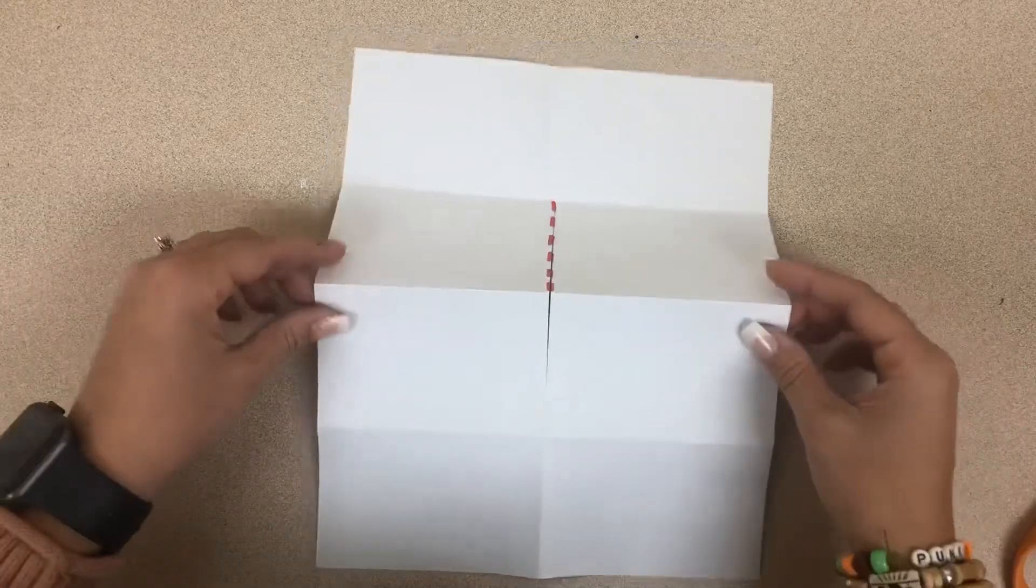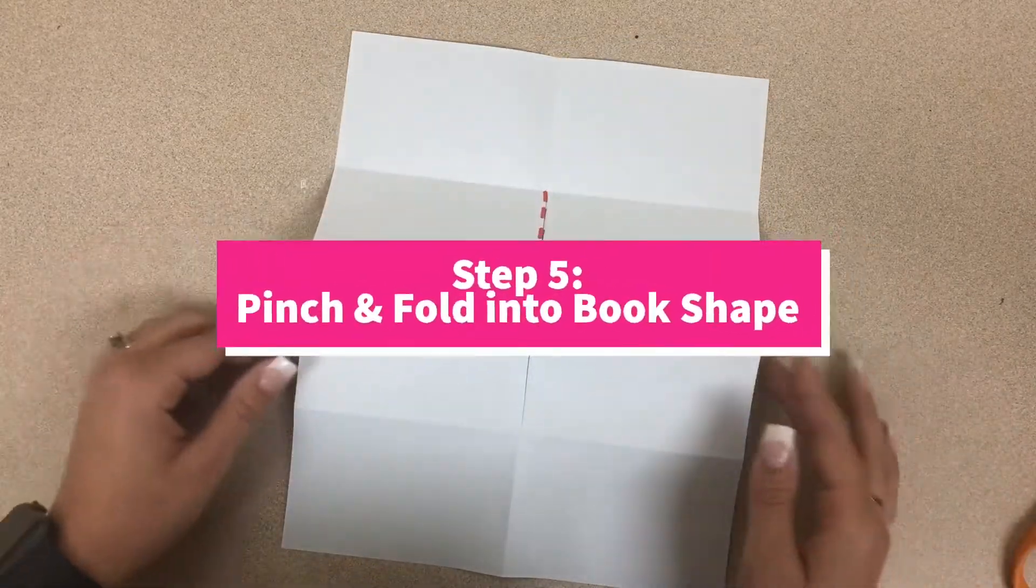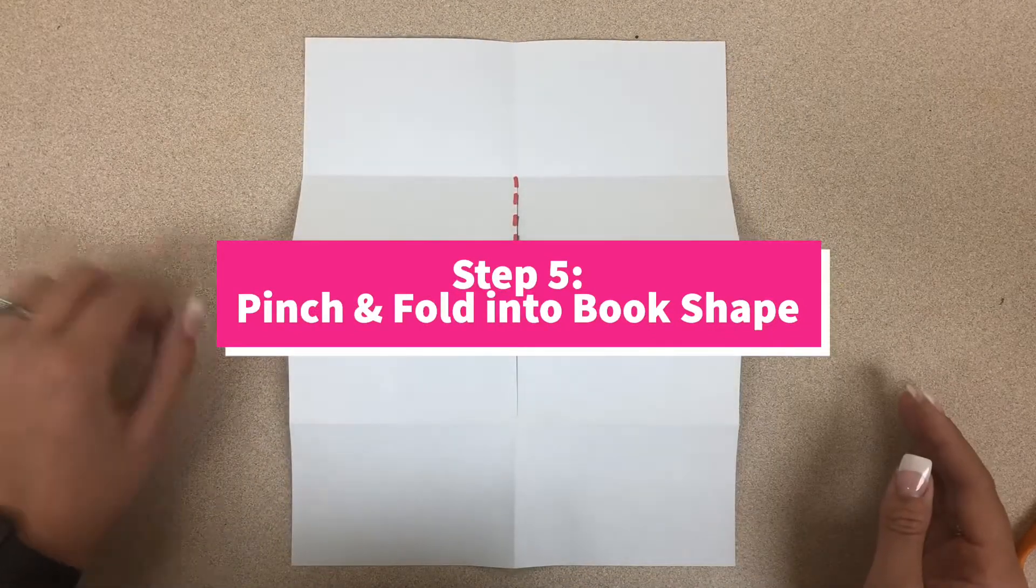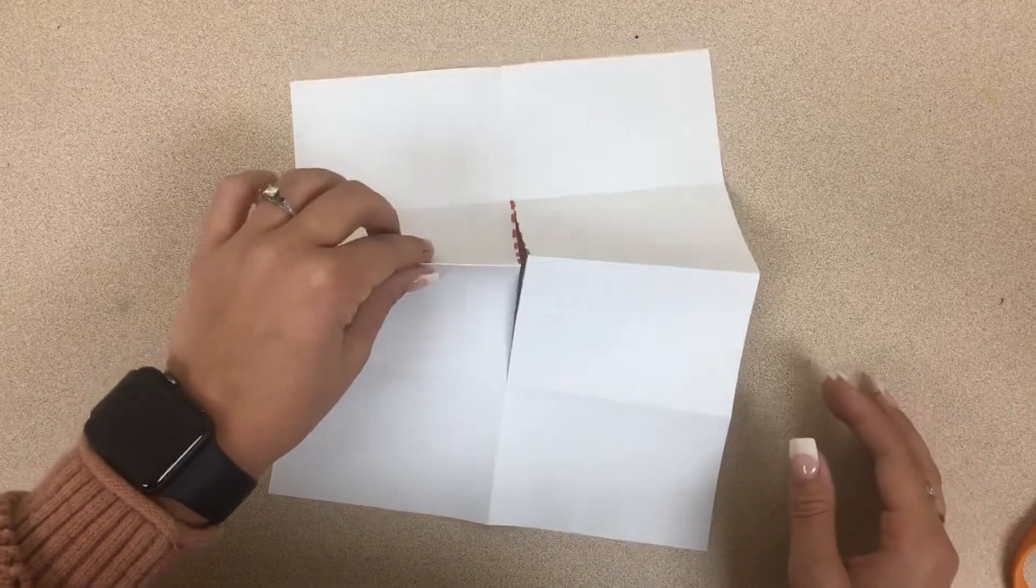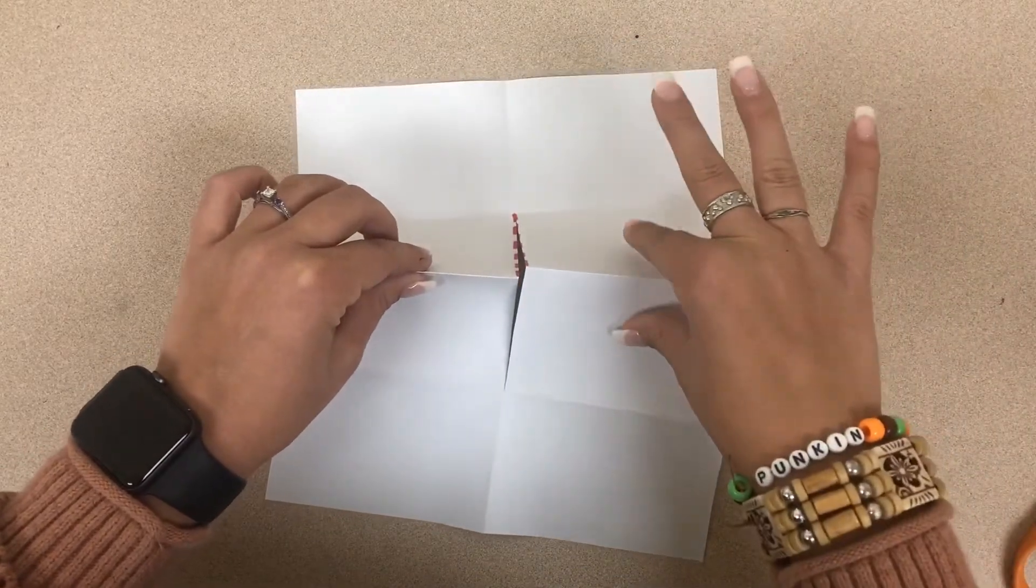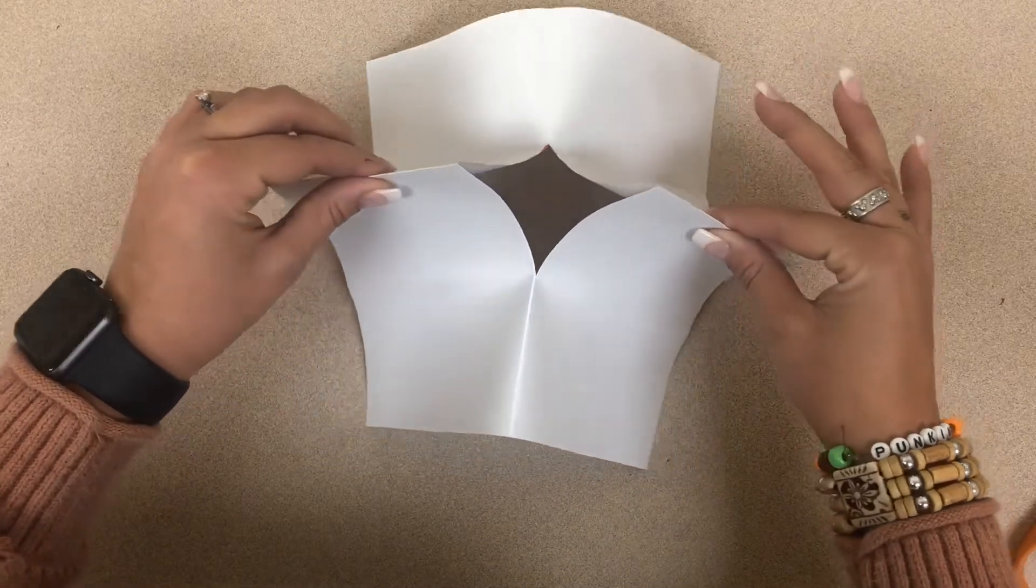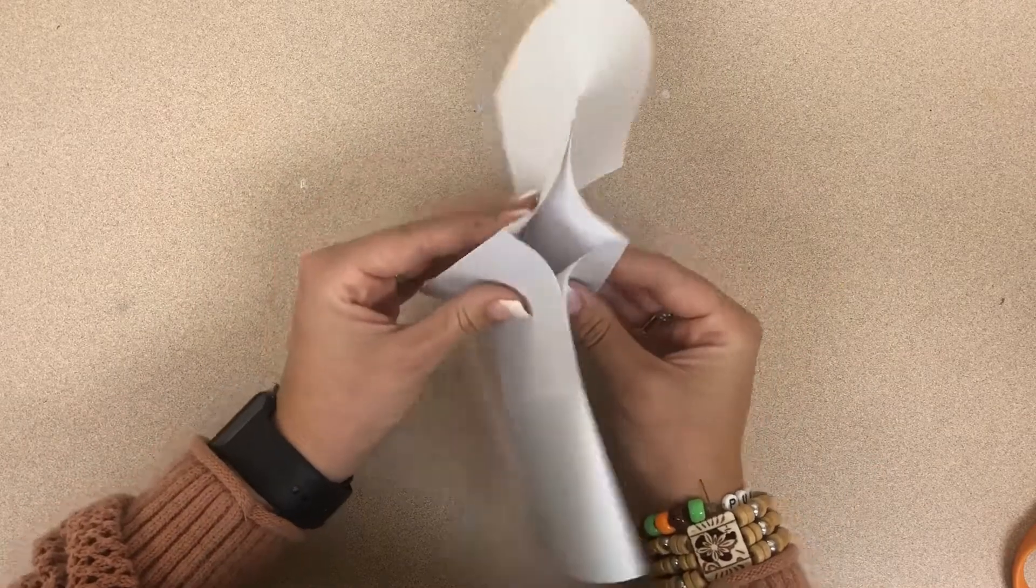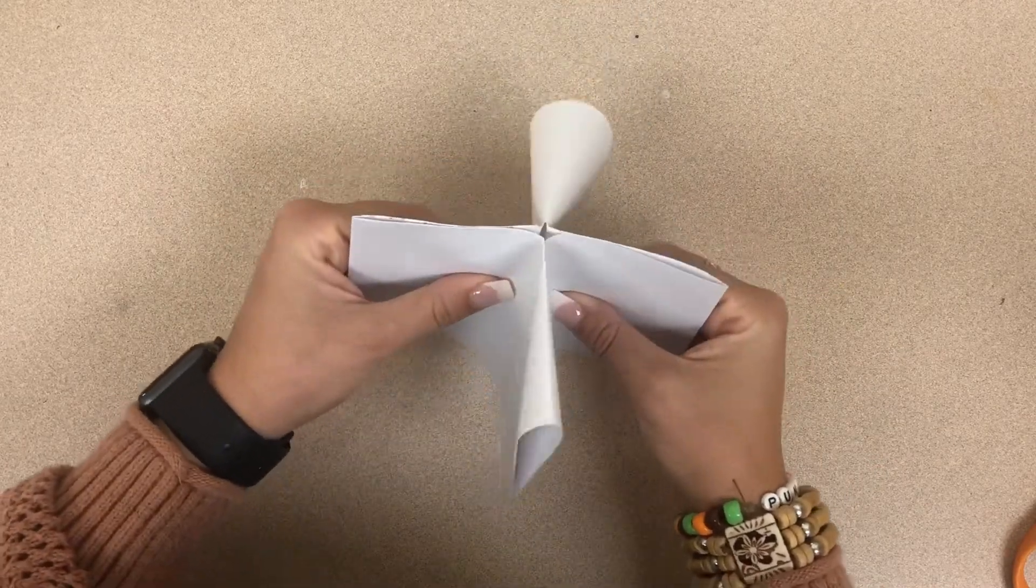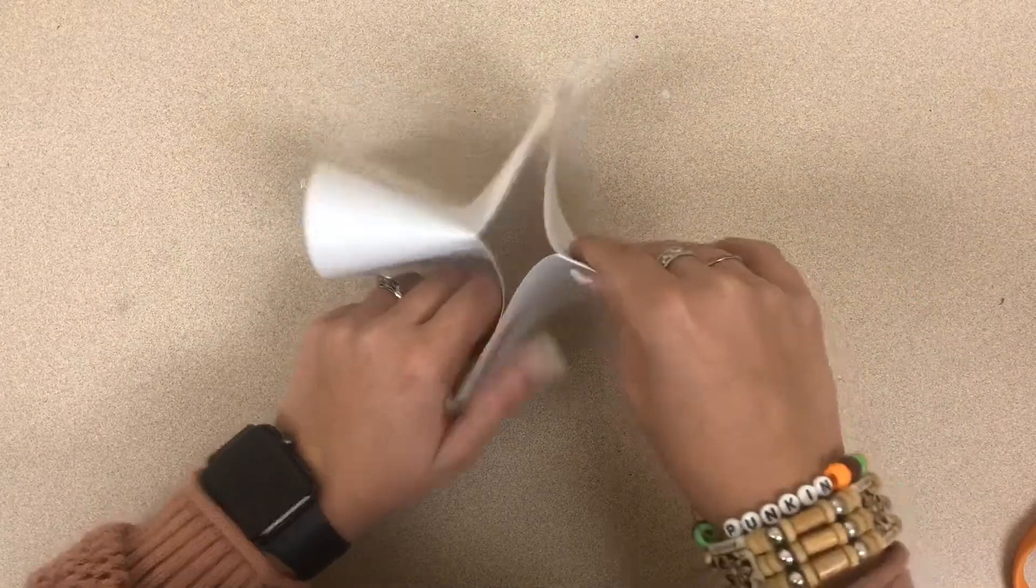Then to make this book, you pinch one side where the cut is on the left side, and then you pinch the right side. Then you open up that crease and put it together. You're going to have to crease these little sides down.